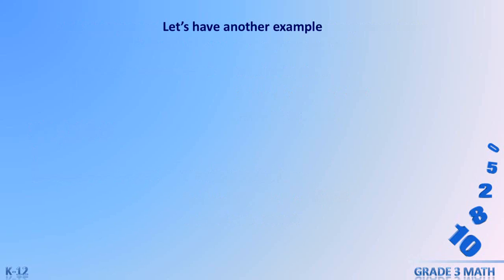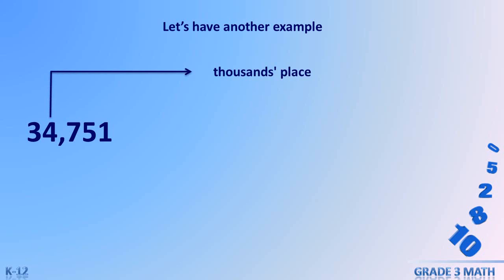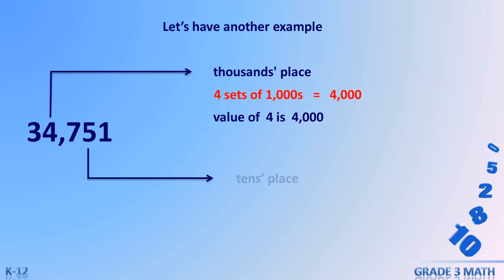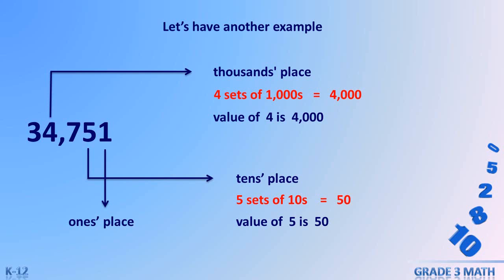Let's have another example: 34751. Digit 4 is in the thousands place value — it means there are four sets of 1000, which is equal to 4000. The value of 4 is 4000. Digit 5 is in the tens place value — there are five sets of tens, equal to 50. The value of 5 is 50. Digit 1 is in the ones place value; its value remains as 1.